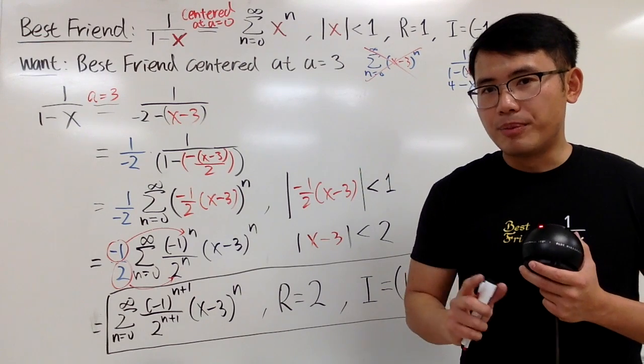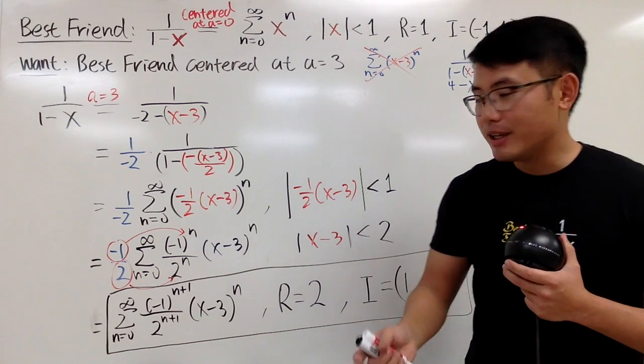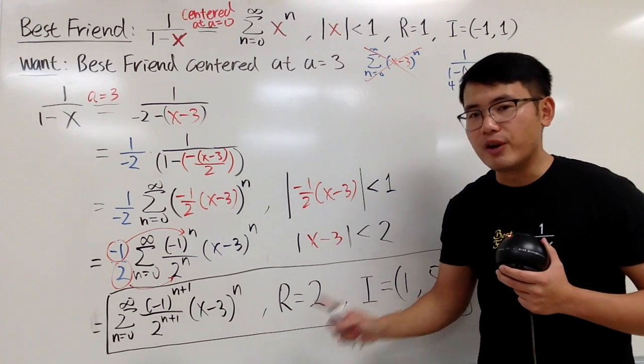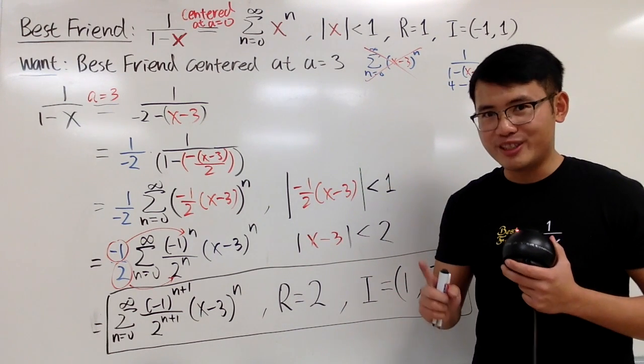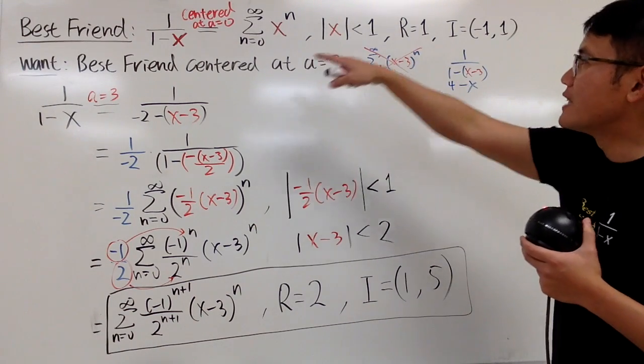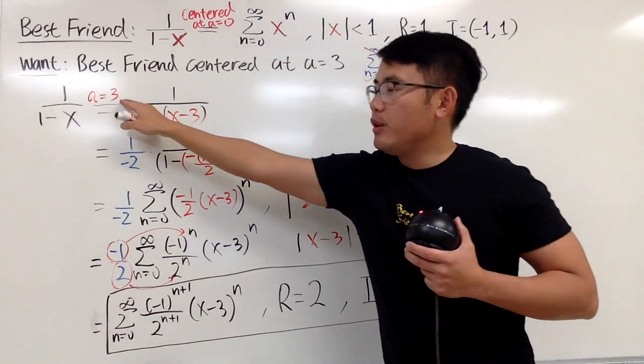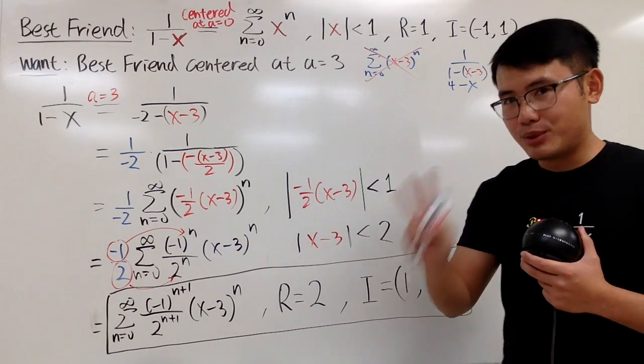Here is the technical part that you have to remember. When you move the center to a different place, you may end up with a different radius of convergence, right? Just like this. Because originally, our best friend, r was 1 for him, right? But once you move it to a equal to 3, r becomes 2.